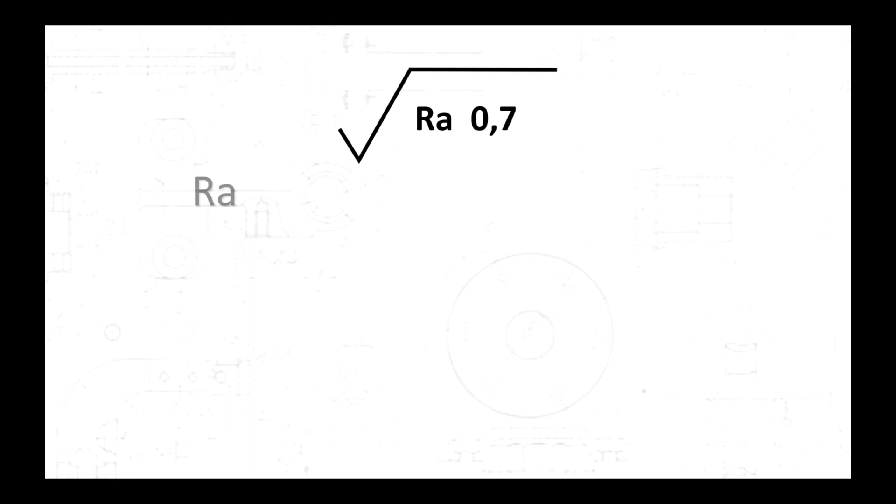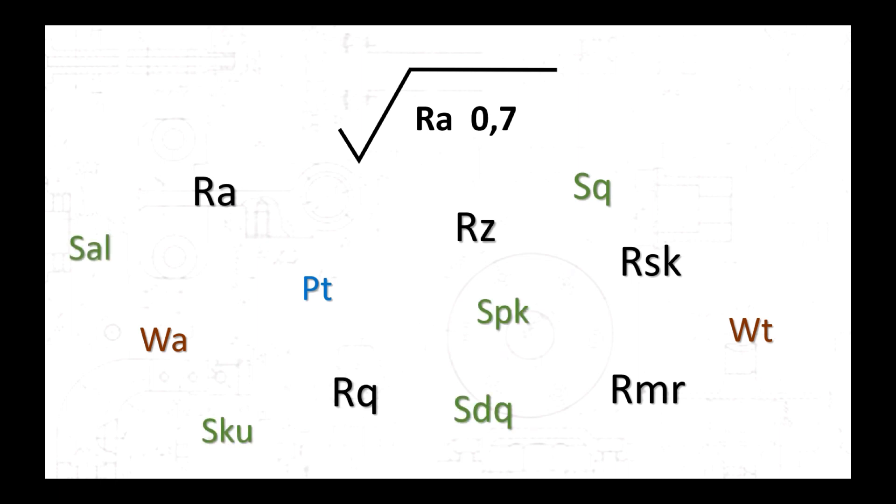Most surface texture parameters are calculated with one or more filters. For profile parameters, the filtration is reflected in the parameter name. PQ for a primary profile, RQ for roughness and WQ for waviness. But in the case of a surface, the name is unchanged, for example SQ will remain SQ, regardless of the filtration.